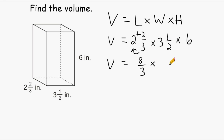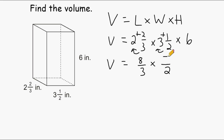For three and a half, we take that denominator of two and write that exactly as it is. Next we multiply the denominator by the whole number — two times three is six — and then we add the numerator to that product: six plus one is seven. So three and a half is equivalent to seven-halves. And if you have a whole number, write that whole number as your numerator and write a one as your denominator.